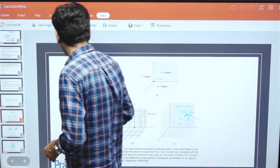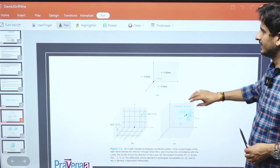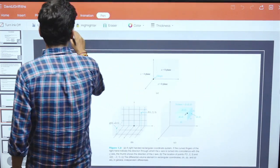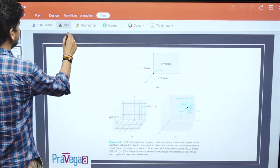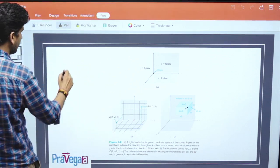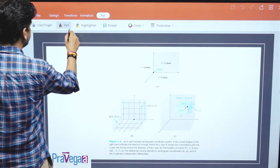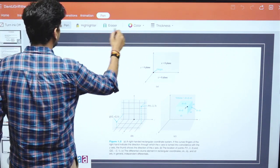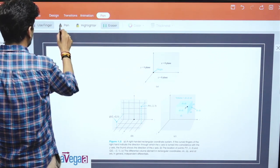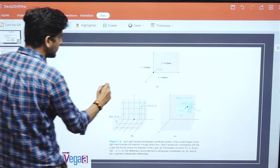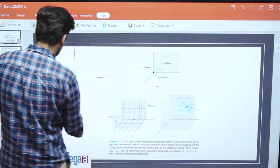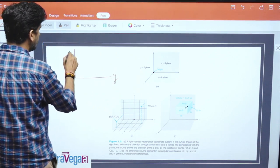The first thing is about the coordinate system. You can see here the Cartesian coordinate system. Suppose this is your coordinate axis: this is x-axis, y-axis, and z-axis.